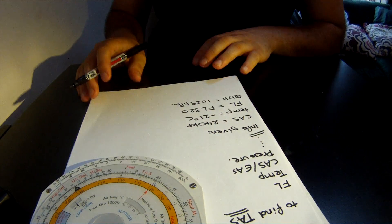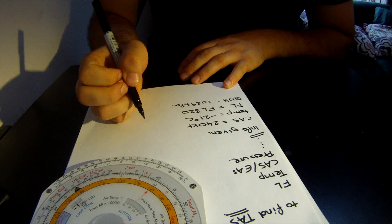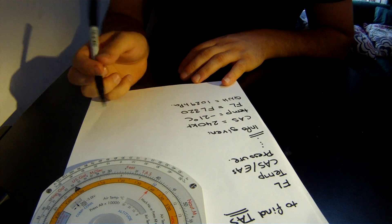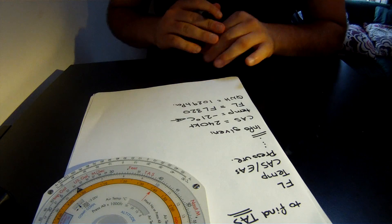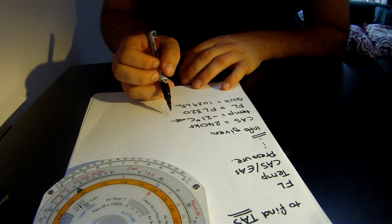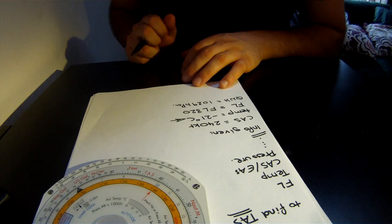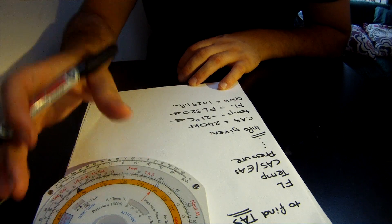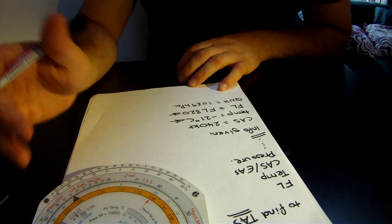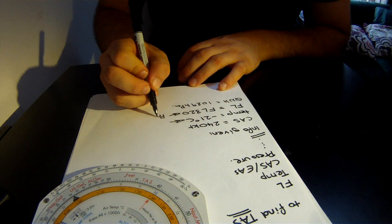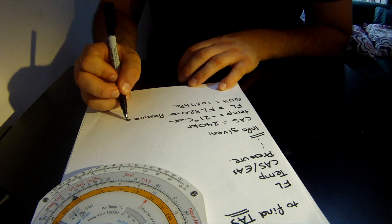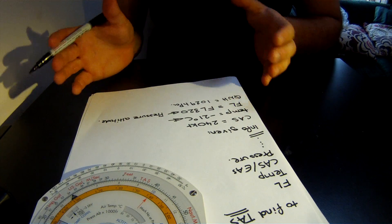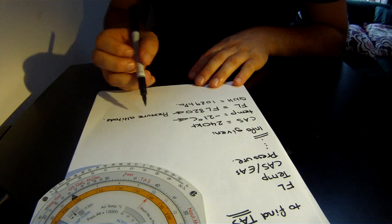There are a few things that affect indicated airspeed: the density of the air, the speed of sound of the environment which is dependent on the temperature, and the altitude. What we're actually going to use is pressure altitude, which is the flight levels, because this is what the airspeed indicator is calibrated to.